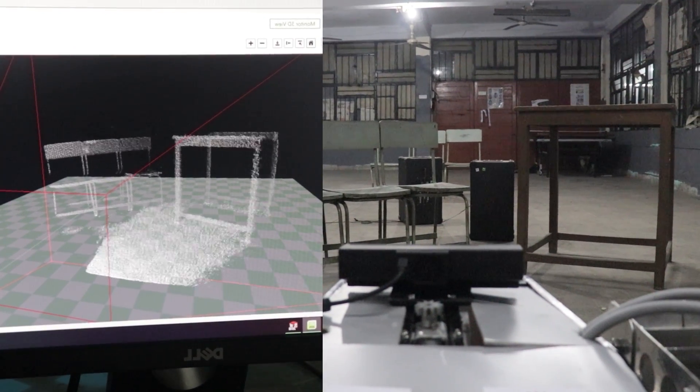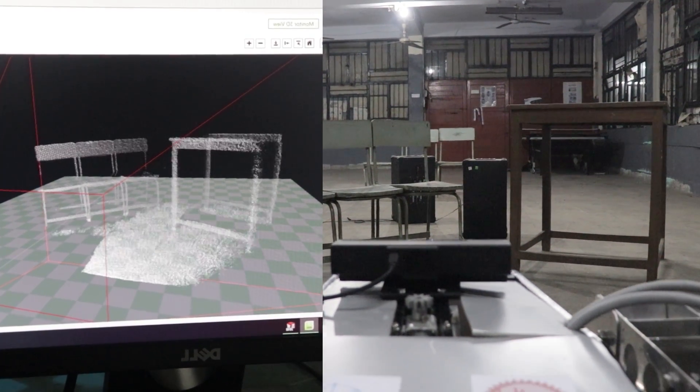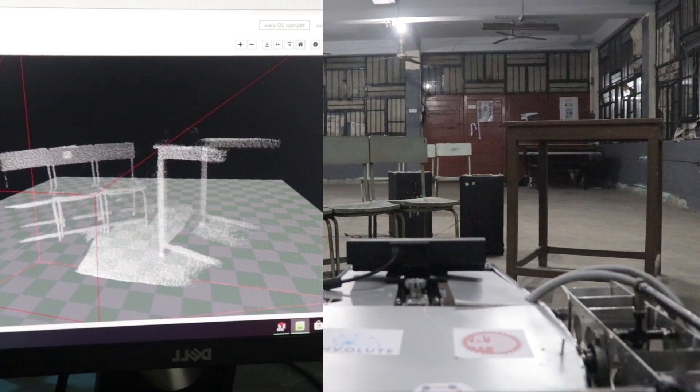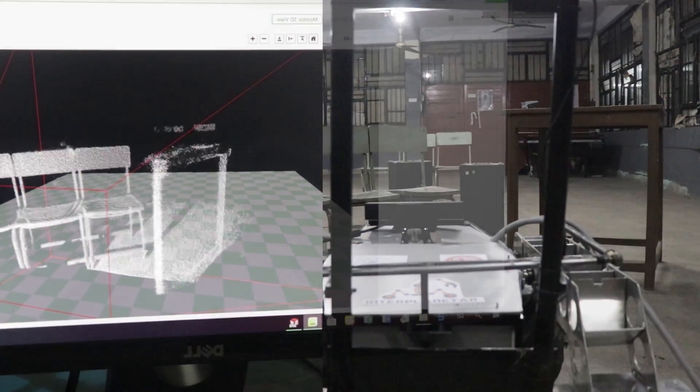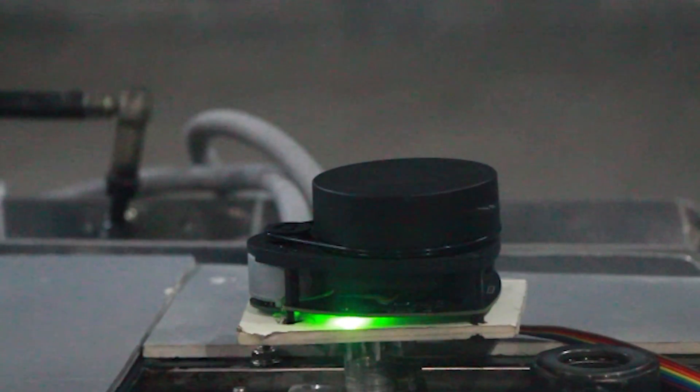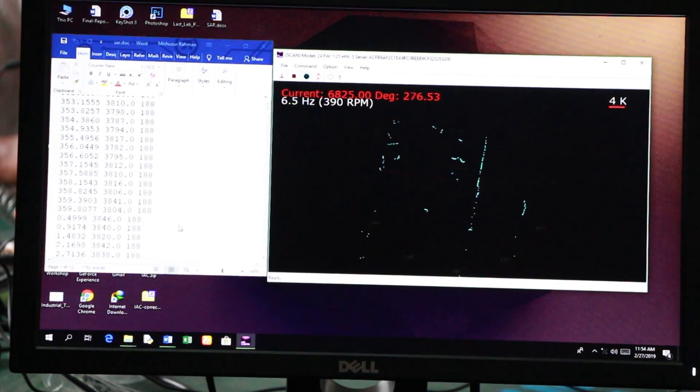For obstacle avoidance in the course of autonomous navigation, this year we are using a Kinect sensor for close-range 3D mapping and a lidar module for overall 2D mapping of the obstacles. Then the data from Kinect and lidar were merged for simultaneous localization and mapping the environment.